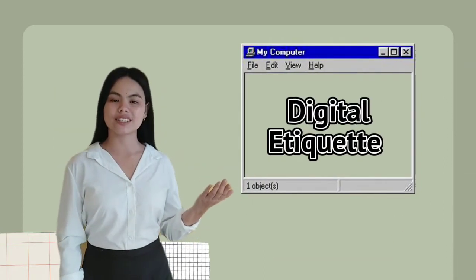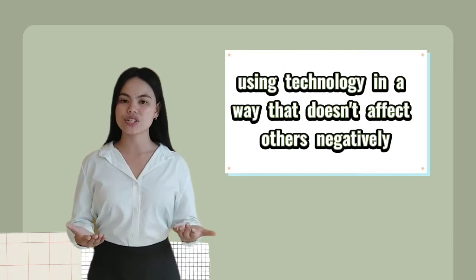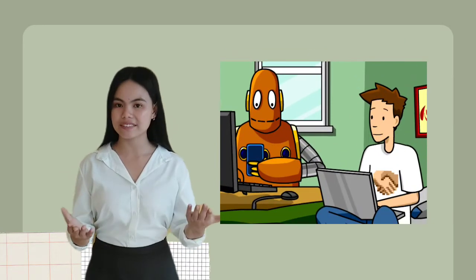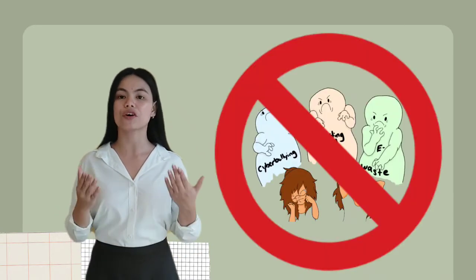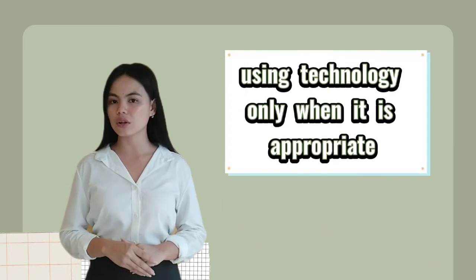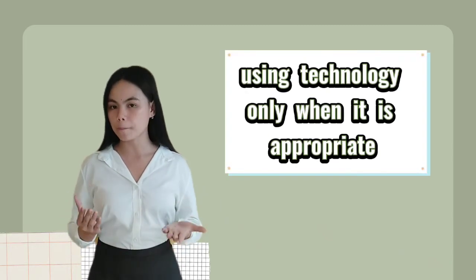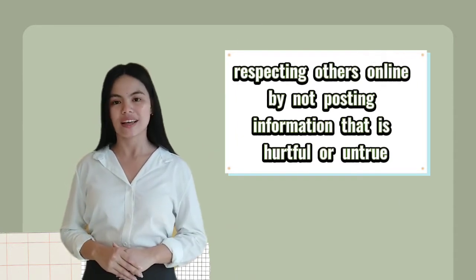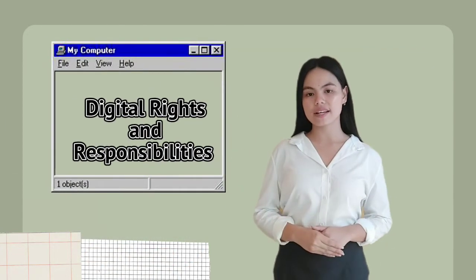The fourth one is digital etiquette. Digital etiquette is using technology in a way that doesn't affect others negatively. You have the integrity or sense of self-management and general responsibility for your actions on the internet and treating people like you would in real life. You can do this by using technology only when it is appropriate and respecting others online by not posting information that is hurtful or untrue.